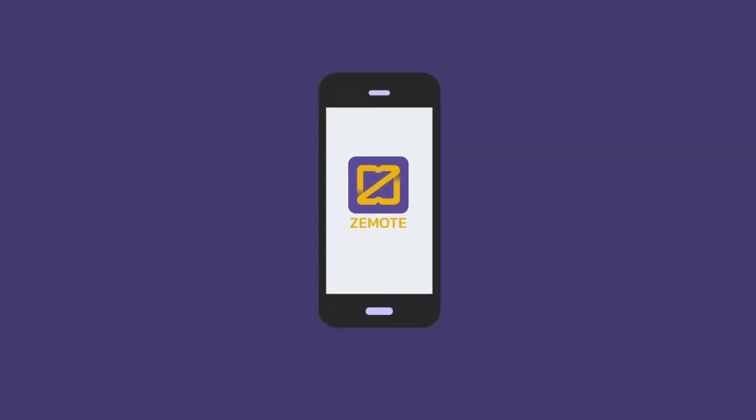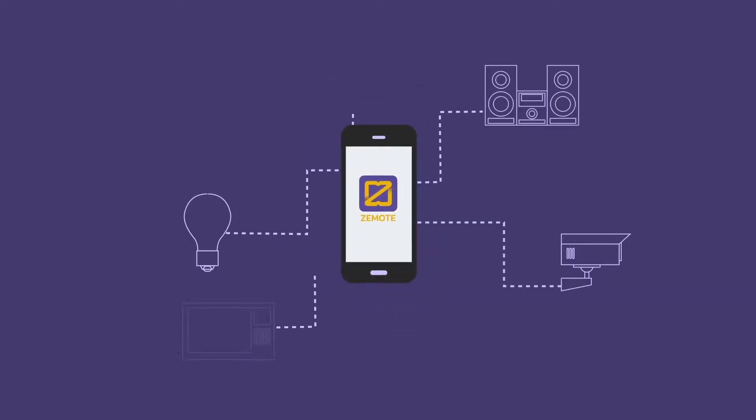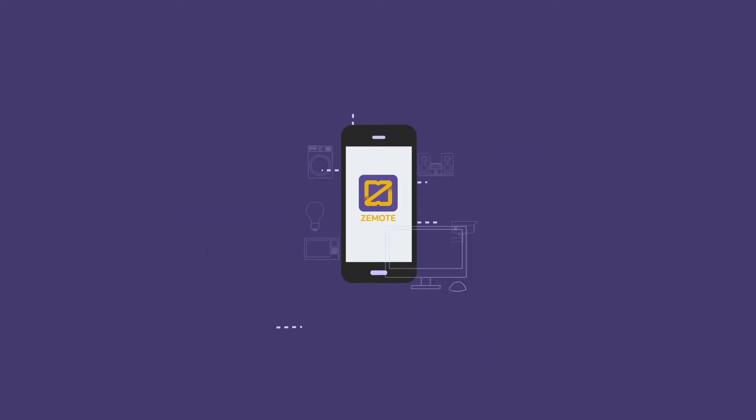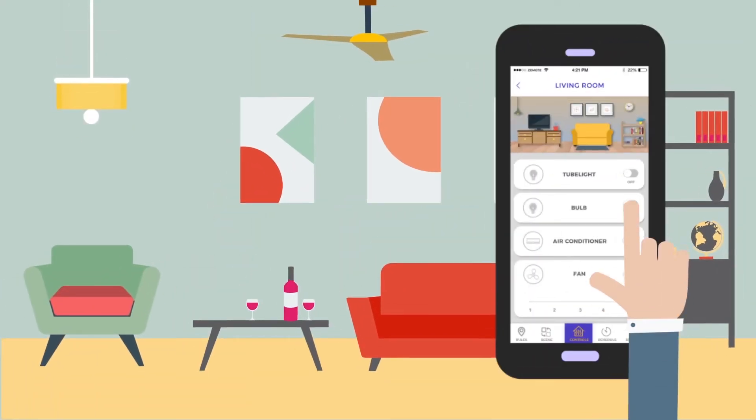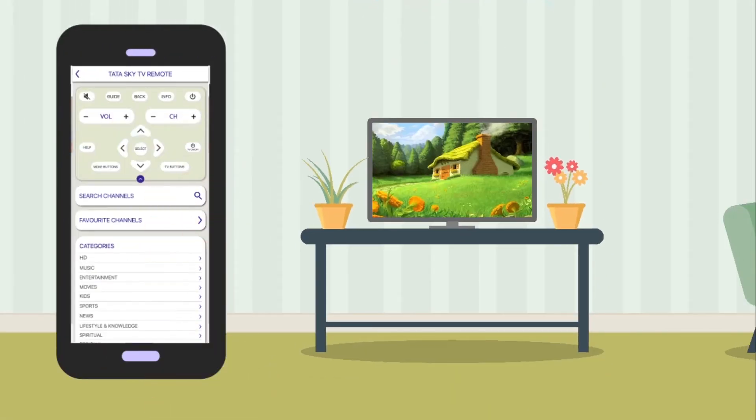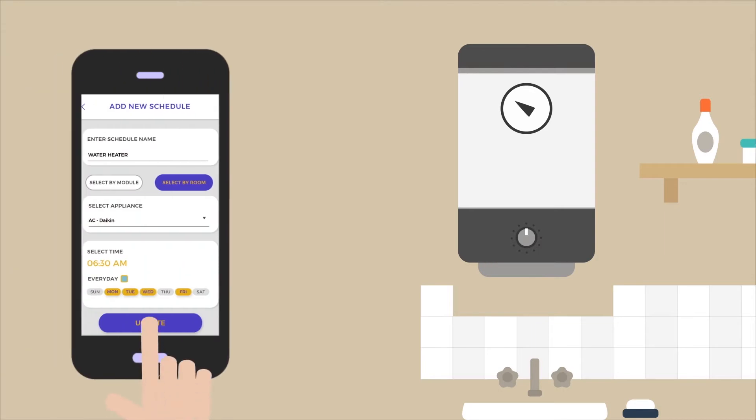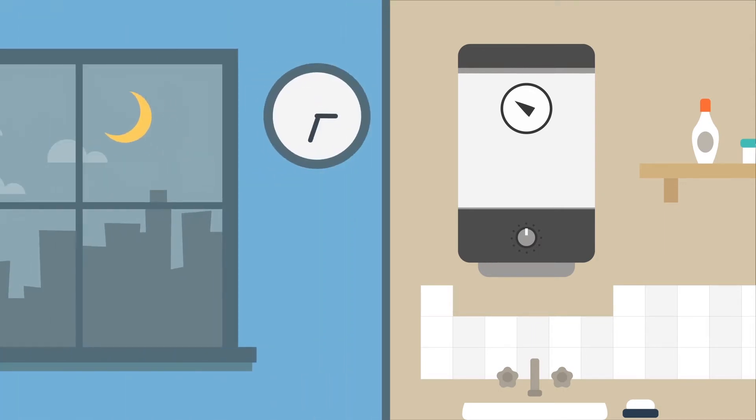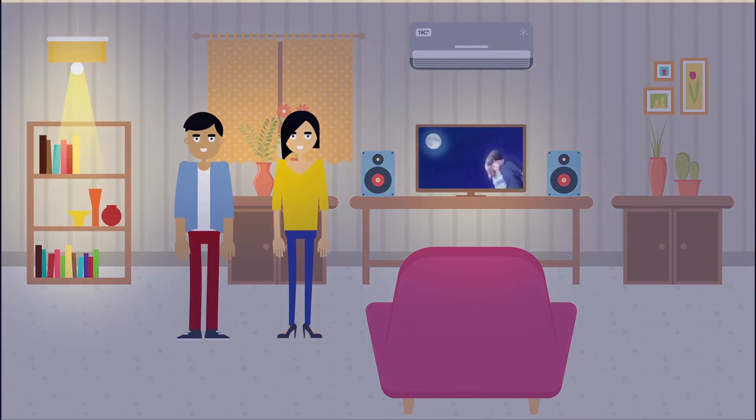On the Zemote app you can control your lights and fans, set AC temperature, change DTH channels, and not only that, you can also schedule your appliances, set scenes for your different modes.